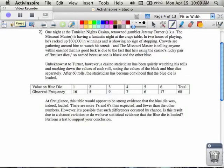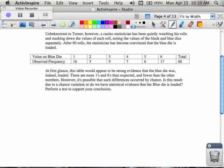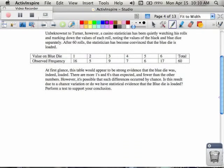Okay, last example for today. One night at the Tunisian Knights Casino, renowned gambler Jeremy Turner, aka the Missouri Master, is having a fantastic night at the craps table. In two hours, he's racked up 30 grand in winnings and is showing no sign of stopping. Crowds are gathering around to watch the streak. The Missouri Master is telling anyone with an earshot that his good luck is due to the fact that he's using the casino's lucky pair of dice, the bruisers, because one's black and one's blue. Unbeknownst to Turner, however, a casino statistician has been quietly watching the rolls and marking down the values of each roll, noting the values of the black and blue dice. After 60 rolls, the statistician is convinced the blue dice is loaded.